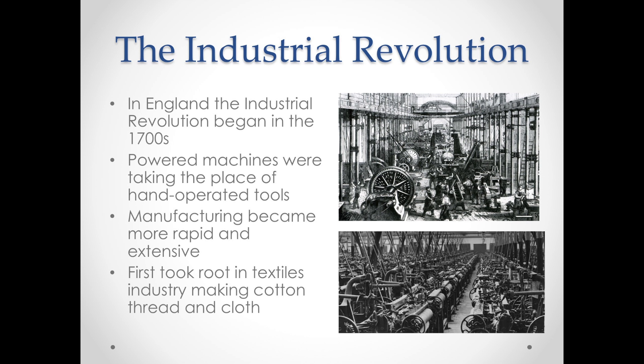The Industrial Revolution is a period when powered machines were taking the place of hand-operated tools. Instead of things being handmade, they're able to be made in a factory. Manufacturing becomes more rapid and extensive, really driven by the steam-powered engine. The steam-powered engine patented in 1769 by James Watt helped lead to an explosion in factories and industrialization. The first areas that took root were in the textile industry — making cotton into thread and cloth — which quickly became one of the most profitable industries in England, leading to higher demand for raw materials like cotton, affecting the United States South.